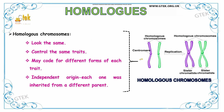Homologous chromosomes look the same and control the same trait. They may code for different forms of each trait. They are of independent origin — each one was inherited from a different parent. Here you can see the homologous chromosomes, including the centromere and the replication of sister chromatids.